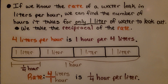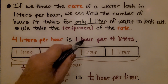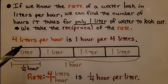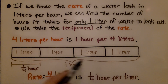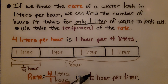If we know the rate of a water leak in liters per hour, we can find the number of hours it takes for only 1 liter to leak out — we take the reciprocal of the rate. Our rate is 4 liters per hour, which is 1 hour per 4 liters. If the entire bar diagram represents 1 hour with 4 liters in that hour, then 1 liter is 1/4 hour. The rate of 4 liters per hour is equivalent to 1/4 hour per liter.